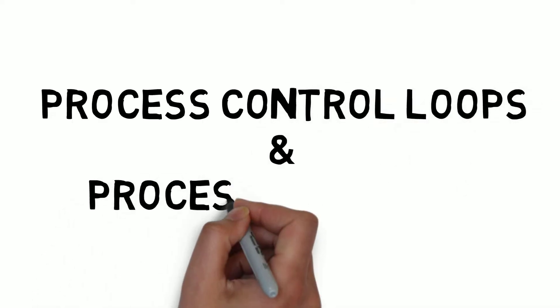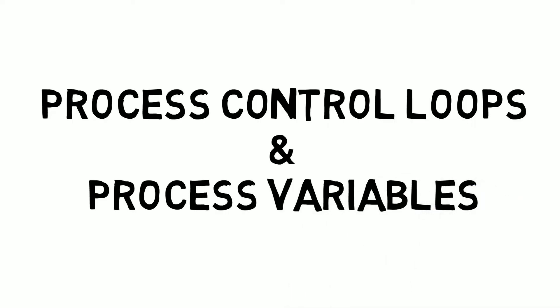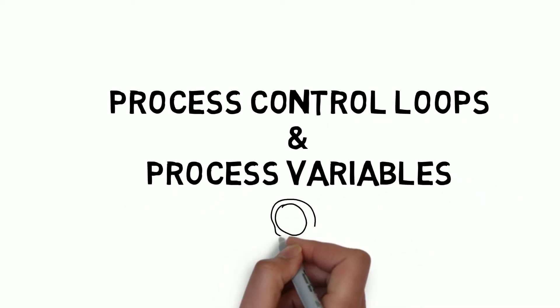Today we're going to expand on this and talk about how process variables are used in a typical modern control system within industry. We're then going to talk about how process variables are measured and processed.